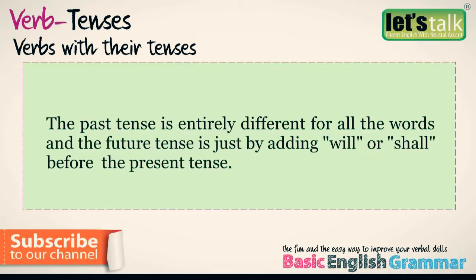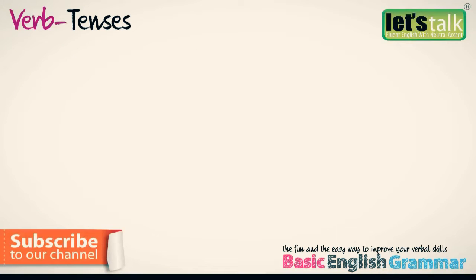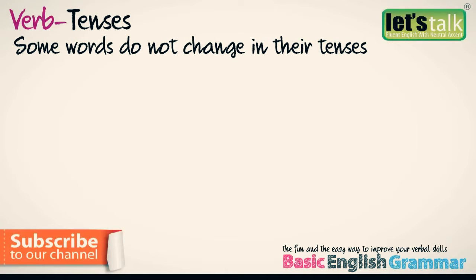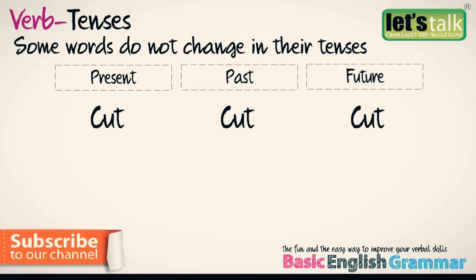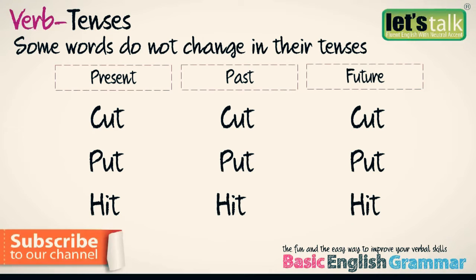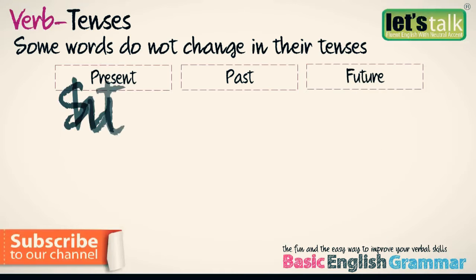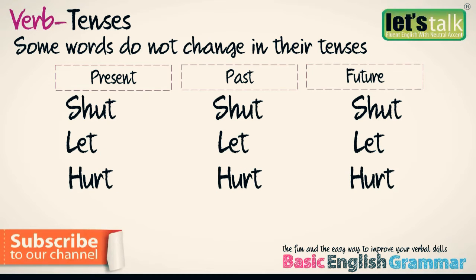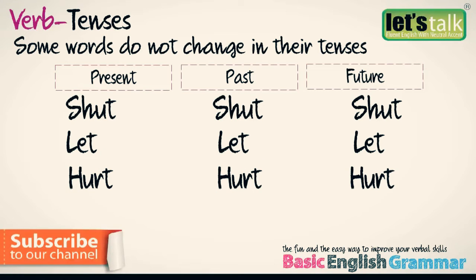The past tense is entirely different for all those words, and the future tense is formed by adding will or shall before the present tense. Now some words do not change in their tenses. For example: Catch — Caught, Caught, Caught. Put, Put, Put. Hit, Hit, Hit. Shot, Shot, Shot. Let, Let, Let. Hurt, Hurt, Hurt. Cost, Cost, Cost.